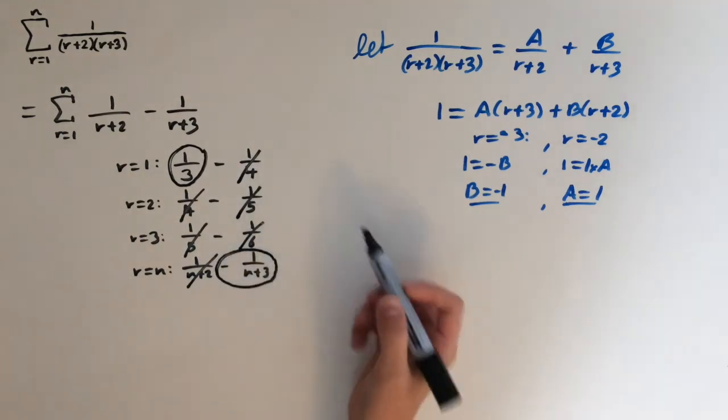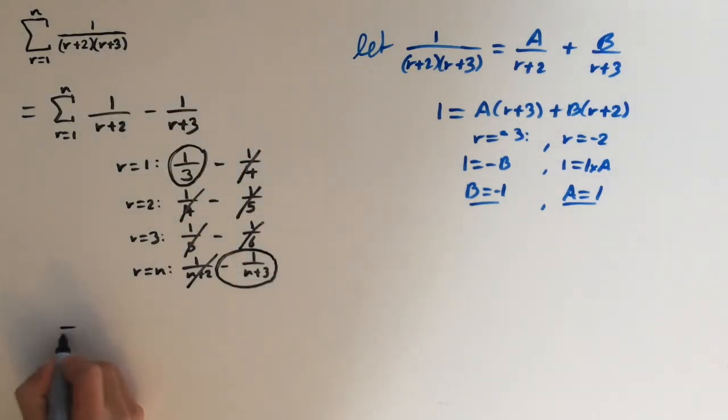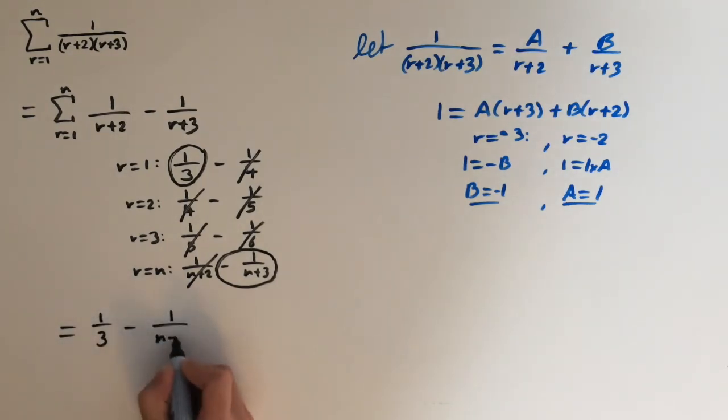So this is quite cool because this is what this series is going to equal. So this equals 1 over 3 minus 1 over n plus 3.